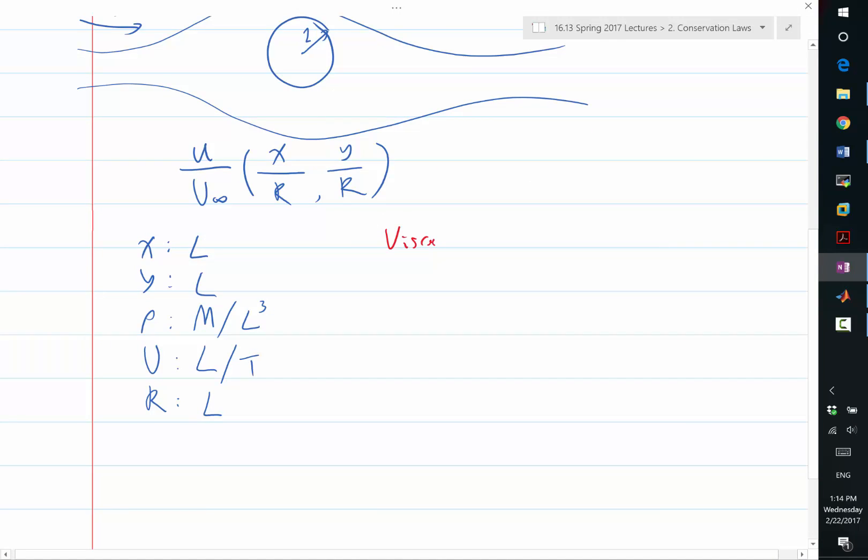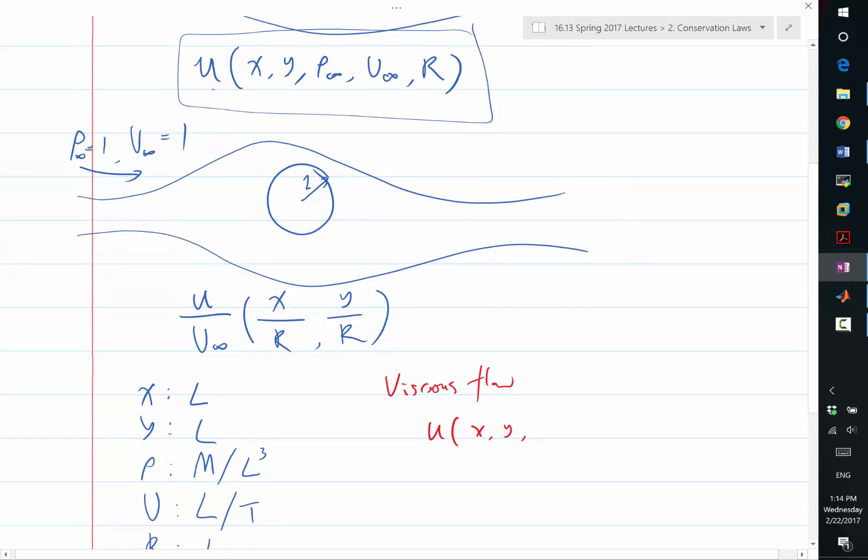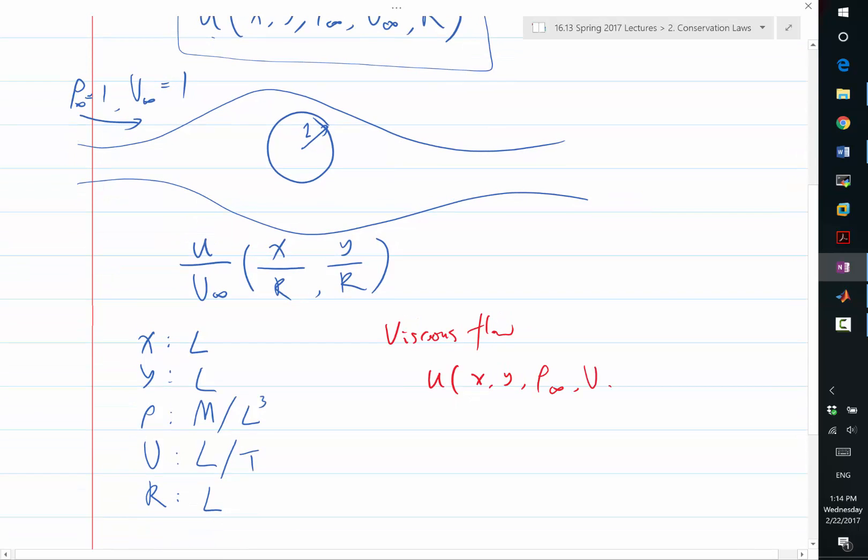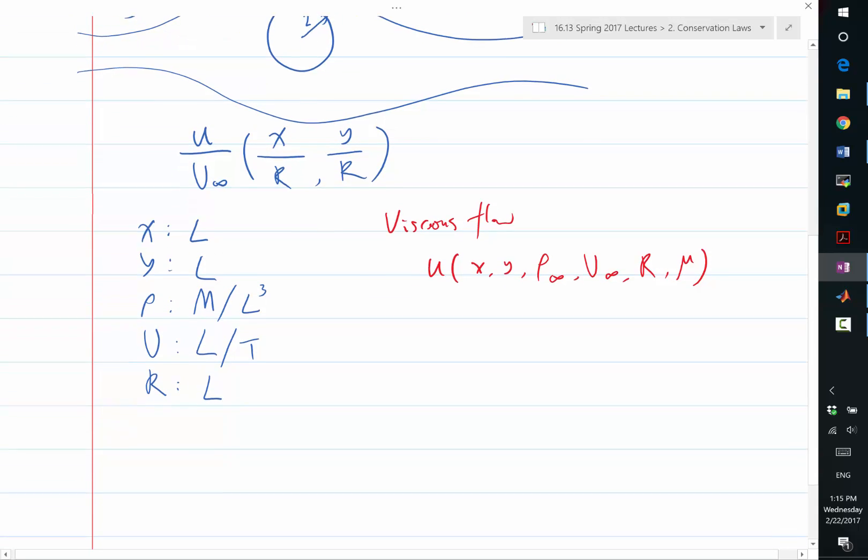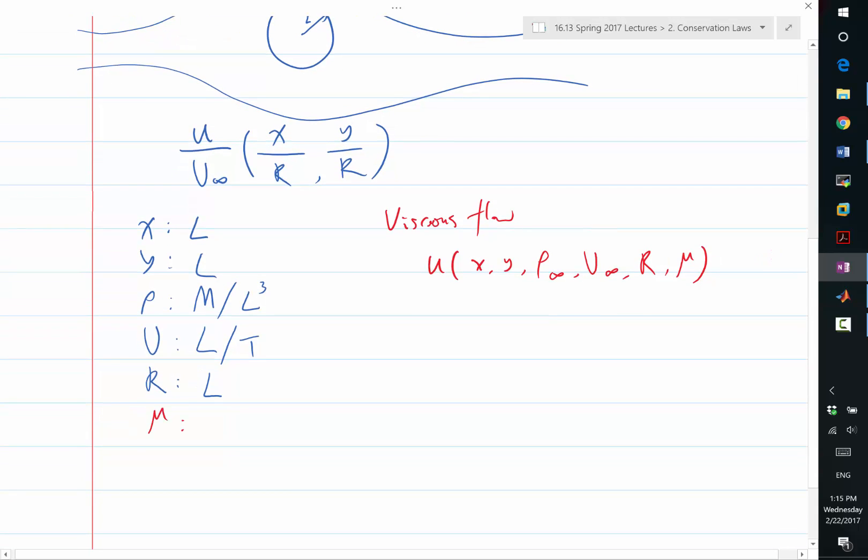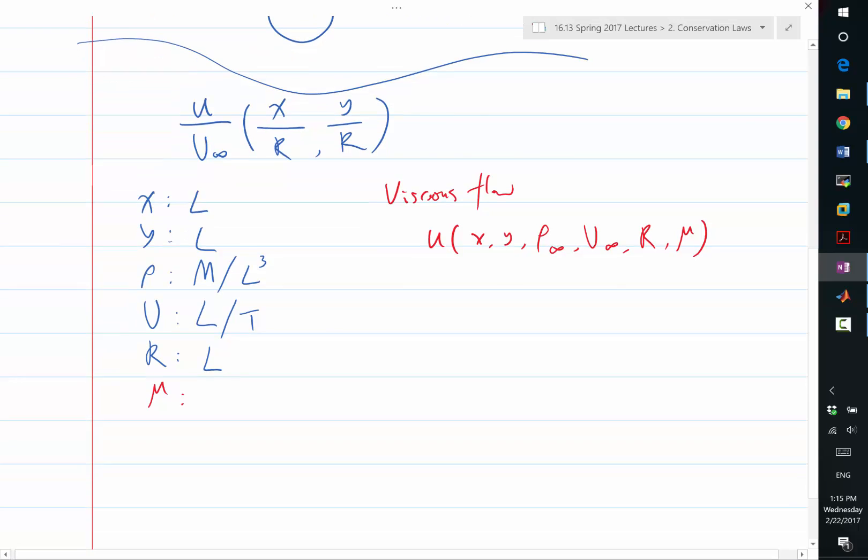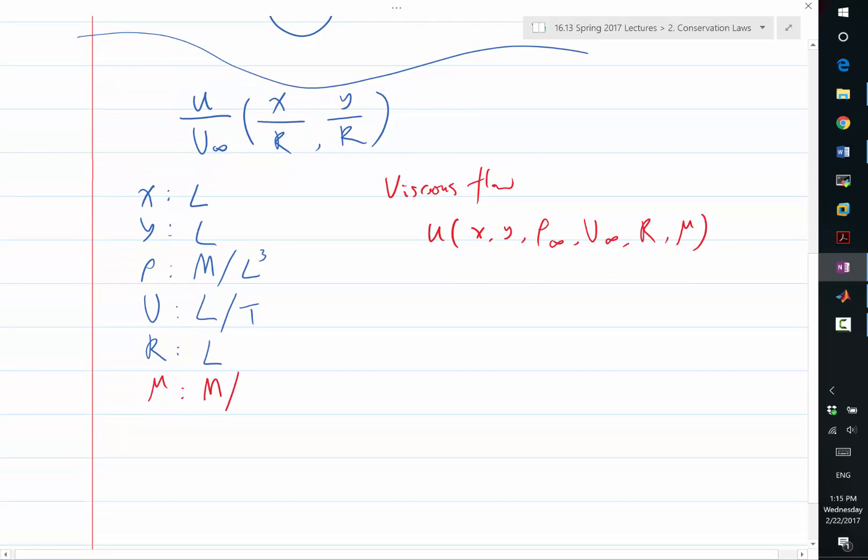So for viscous flow, u is x, y. Again, let's say rho infinity, u infinity, r, and mu. So we still have all these dimensions, but we have another dimension, mu being what? What's the dimension of the dynamic viscosity? Mass over length. So you have mass over length and time.